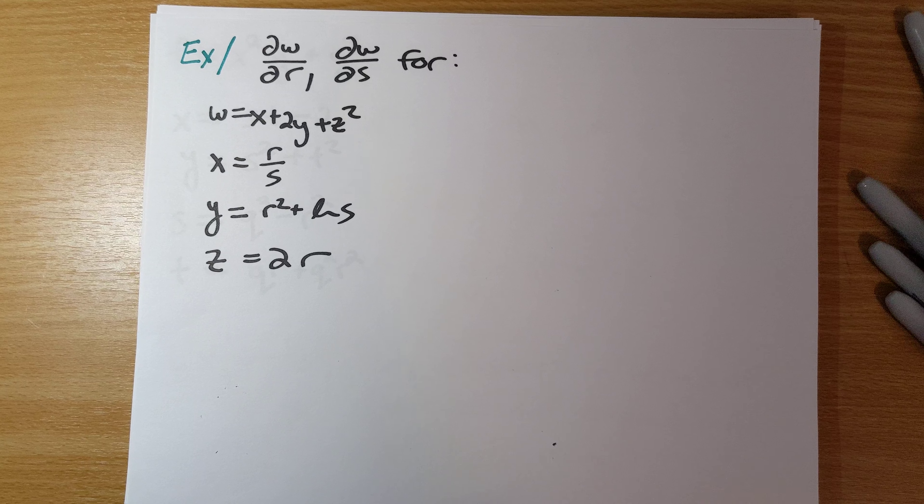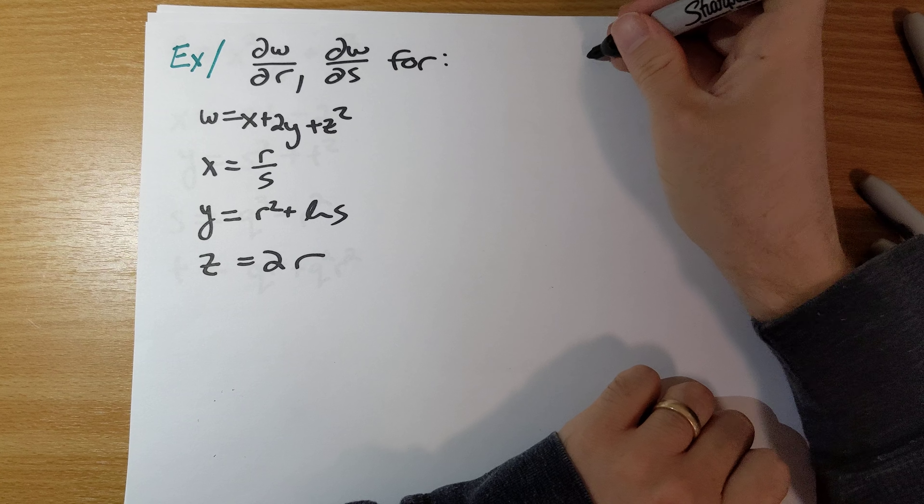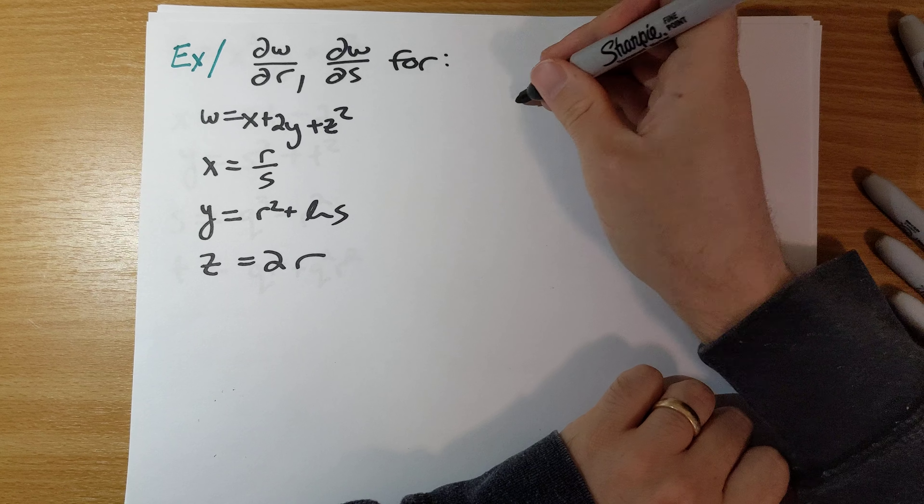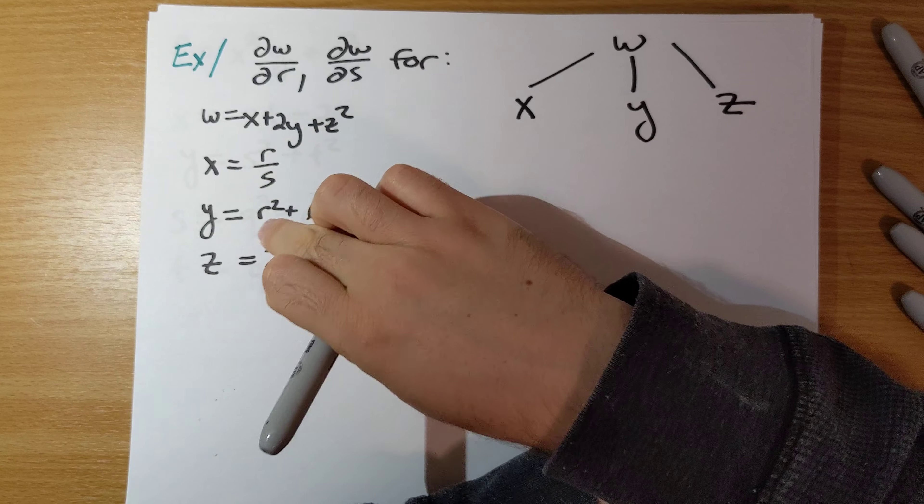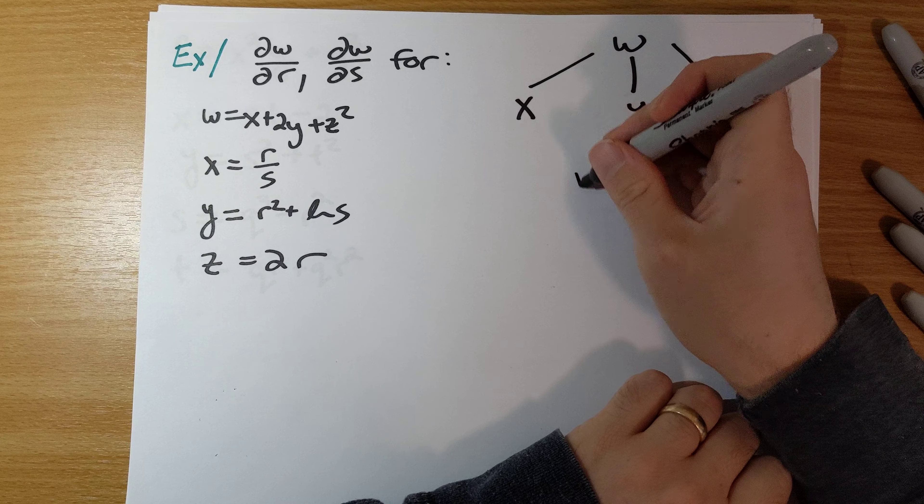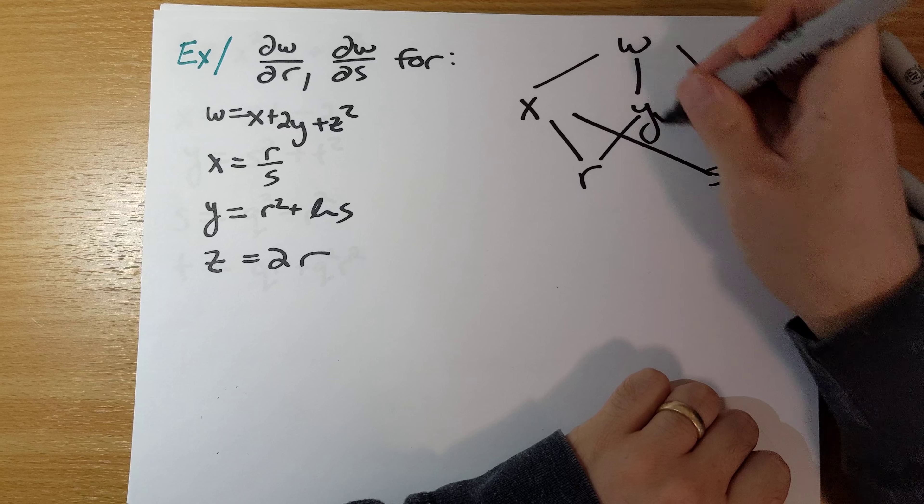So W here, X, Y, and Z. W is a function of X and Y and Z. X, Y, and Z are all functions potentially of R and S.